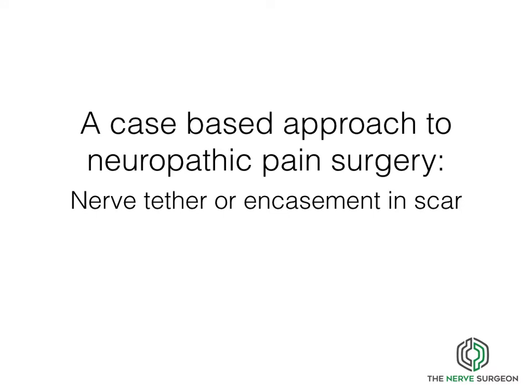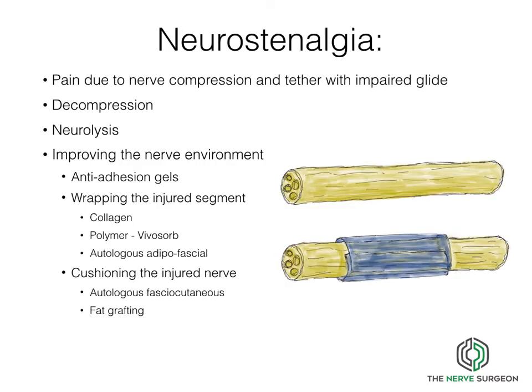Taking a case-based approach to nerve pain management: the first is nerve tether or encasement within scar tissue. Nerves normally have a delicate mesoneurium with vascular inflow allowing gliding. When damaged, the nerve can be stenosed, compressed, and impaired glide results in ischaemia and mechanical irritation causing pain and abnormal sensation. Neurostinalgia is treated by careful dissection and release of the nerve from scar, starting in normal tissues proximal and distal. Care must be taken dissecting retrograde on a nerve because in scar it's possible to damage nerves as they branch.